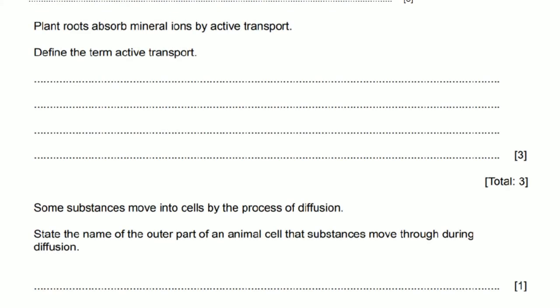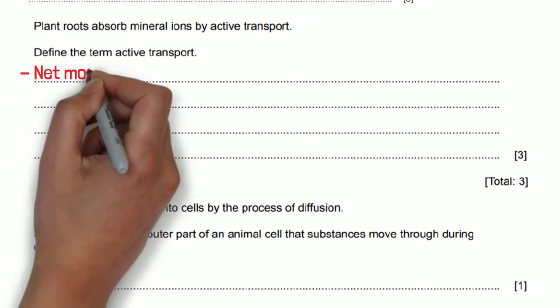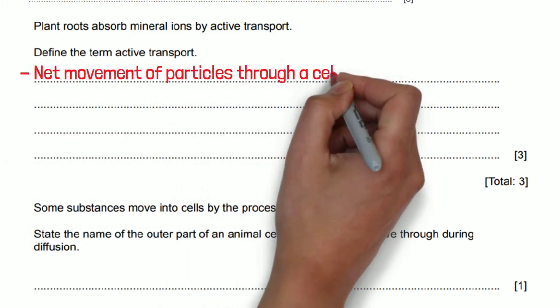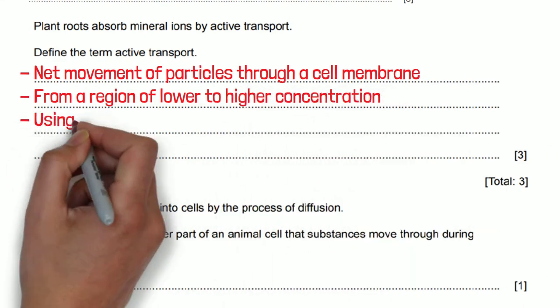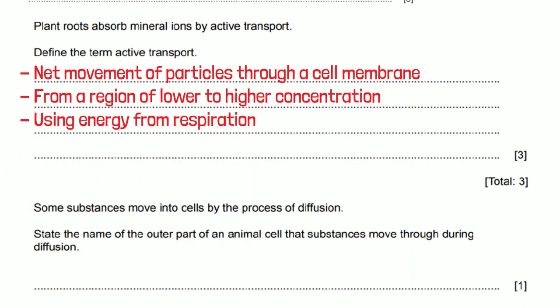The next question is asking us to define the term active transport. This is the net movement of particles through a cell membrane from a region of lower to higher concentration. It also requires energy from respiration to make this happen. The question below says state the name of the outer part of an animal cell that substances move through. Well this is just the cell membrane.